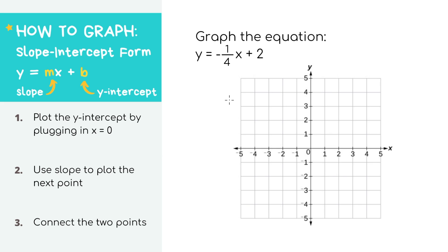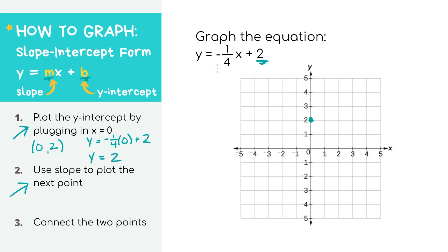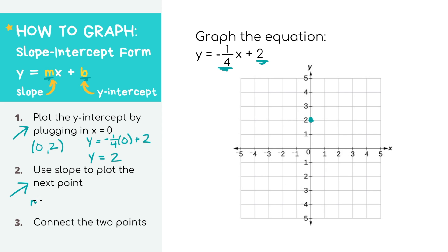Let's try another example with a more complicated looking slope. Step one: plot the y-intercept. b equals two, so the y-intercept is zero, two — which makes sense because plugging in x equals zero gives y equals two. Step two: use the slope to find the second point. m equals negative one over four. One-fourth is a small number so it won't be super steep, and the negative means we're going downhill. Our rise is negative one, so go down by one, and our run is four, so go right by four. That's our second point. Step three: connect them — and that's our graph.